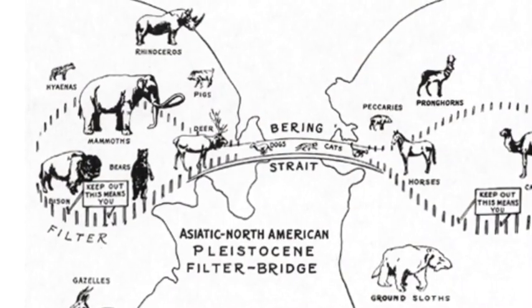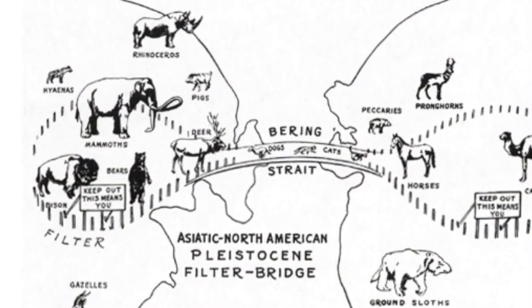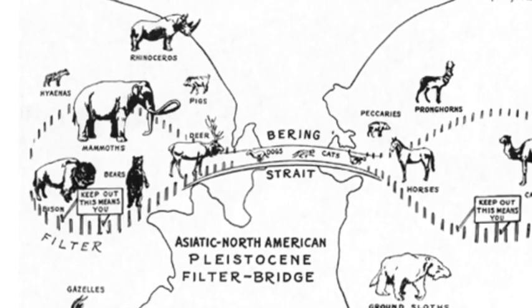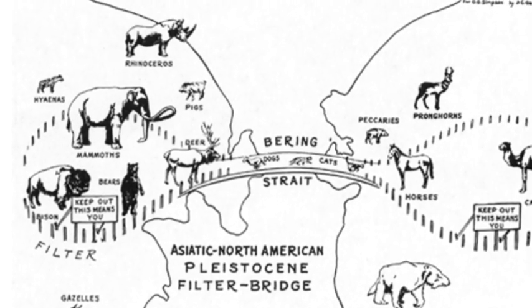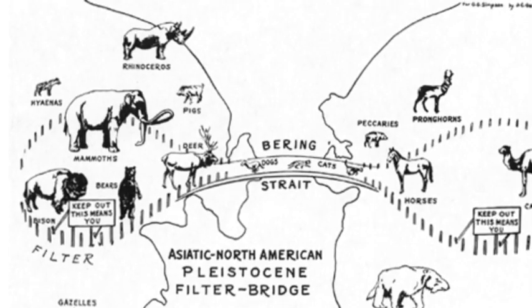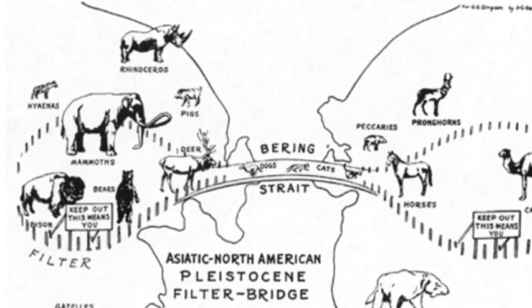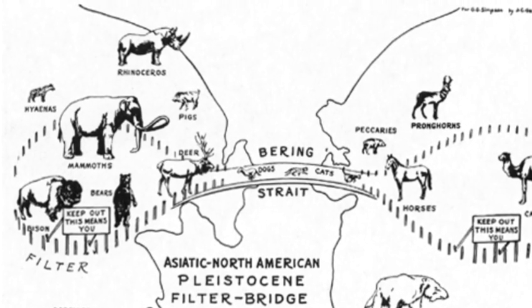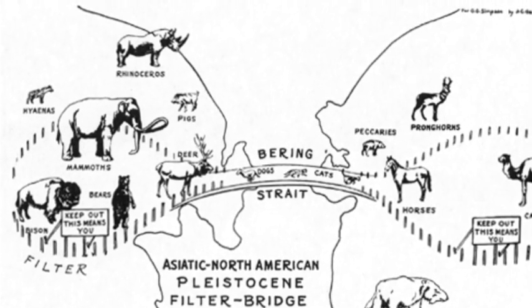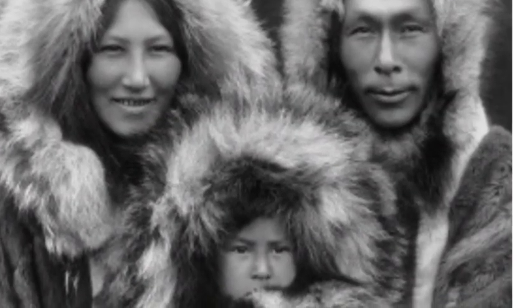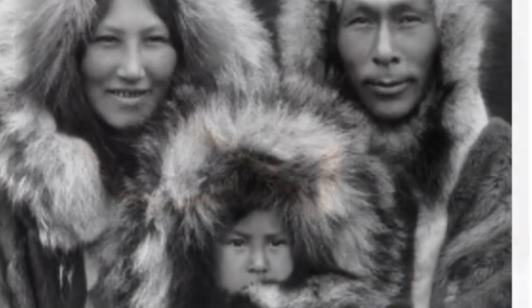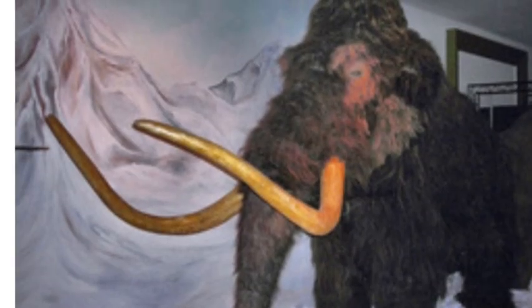In Asia, there lived many people who hunted animals for food. During the Ice Age, those animals migrated, or moved, over the land bridge and into North America. The hunters followed them because they needed food. By following herds of animals, hunter-gatherer people may have crossed the land bridge and then continued across North America and into South America.